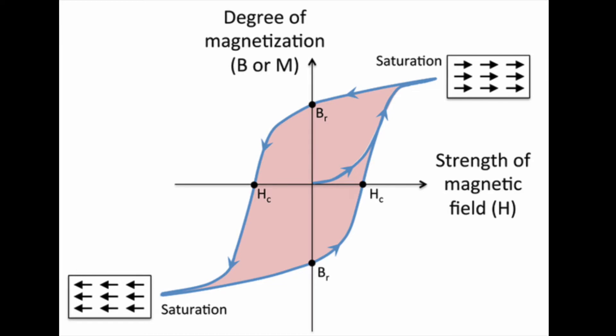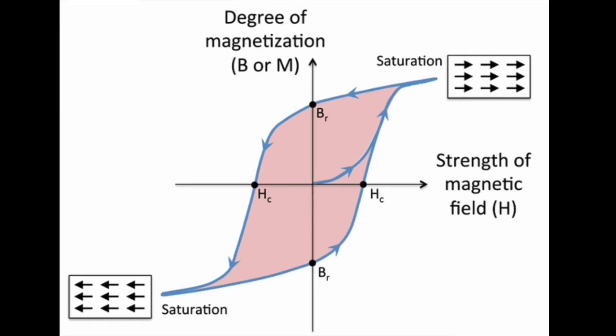As clouds discharge lightning, they discharge energy and then rebuild it from the inflowing winds. This sets up cycles with hysteresis, and two parts of a cloud or two storm cells get out of phase with each other, which creates a huge potential.